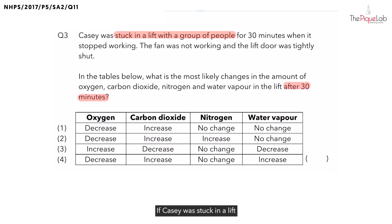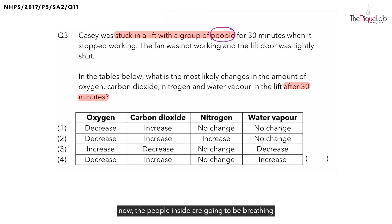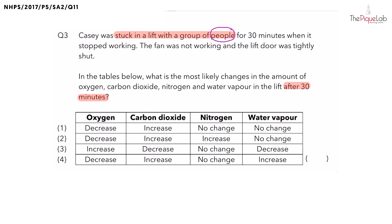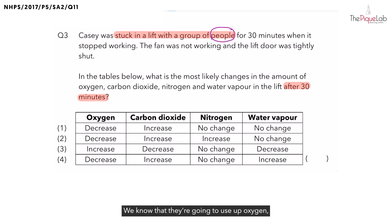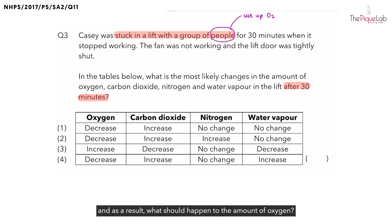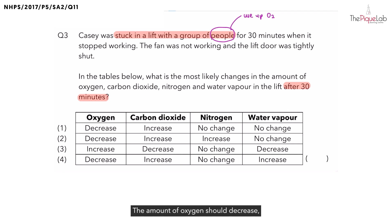Think about this — if Casey was stuck in a lift with a group of people for 30 minutes, the people inside are all going to be breathing. And when they breathe in, what gas are they going to use up? We know they are going to use up oxygen. So the amount of oxygen is going to decrease. Let's write that down and indicate it on the table.